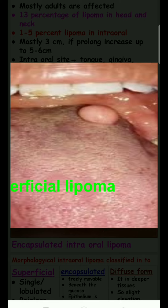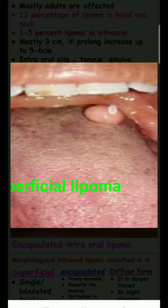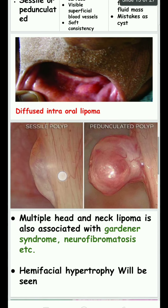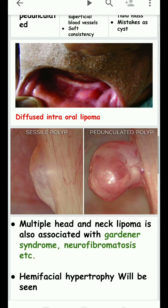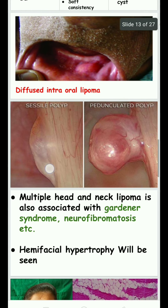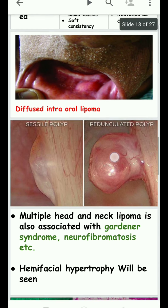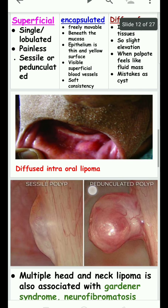Morphologically, intraoral lipoma is classified into superficial, encapsulated, and diffused forms. In the superficial form, it is single or lobulated, painless, and sometimes sessile or pedunculated. Sessile means a broad base, while pedunculated means a short base with a bulgy appearance.